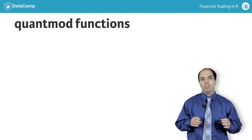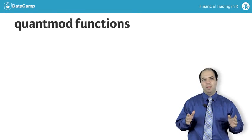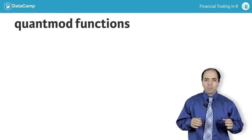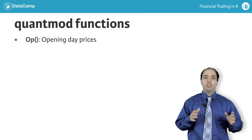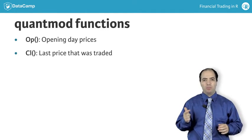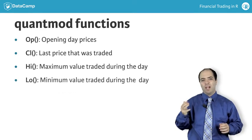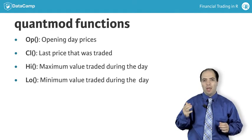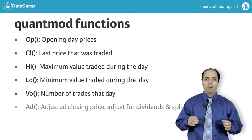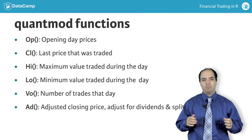To understand what these terms mean, know that the US markets open at 9:30 AM EST and close at 4 PM. The open is the price at which trading begins. The closing price is the last price that was traded. The high and low are the maximum and minimum values that the asset reached over the course of the day, respectively. The volume details the number of shares traded, and the adjusted close is the close adjusted for dividends and splits.